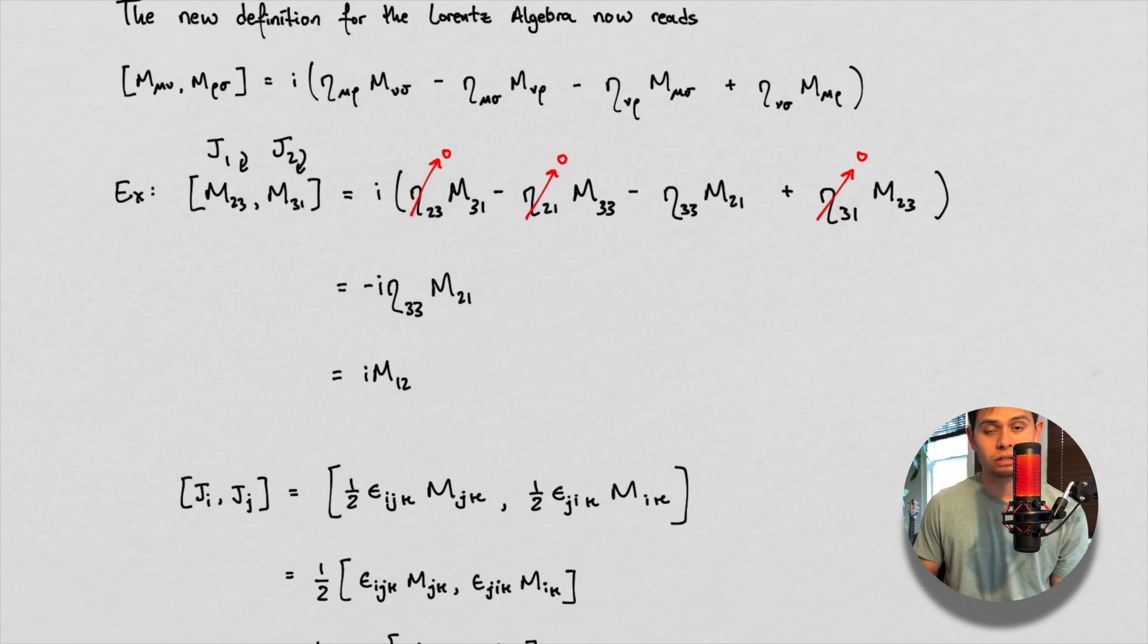And then we say, well, this has to go to zero. This has to go to zero, and this has to go to zero. Because this is just the Minkowski metric. The Minkowski metric is only non-zero along the diagonal. Everything else is zero. So this is off-diagonal, off-diagonal, on-diagonal, and off-diagonal. So all the off-diagonals go to zero. We see this right here.